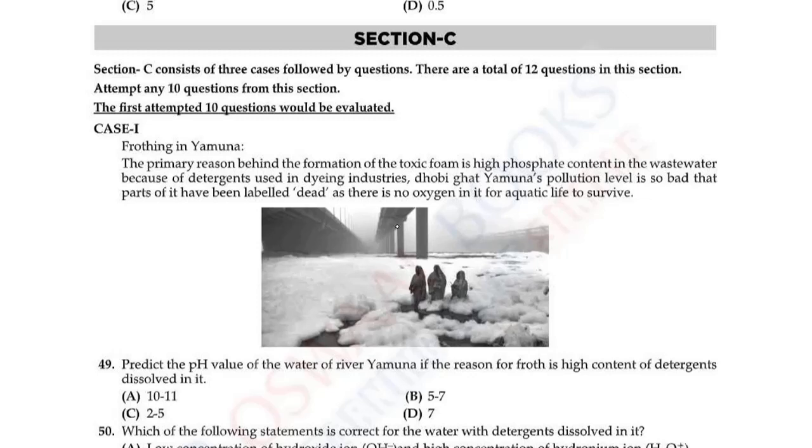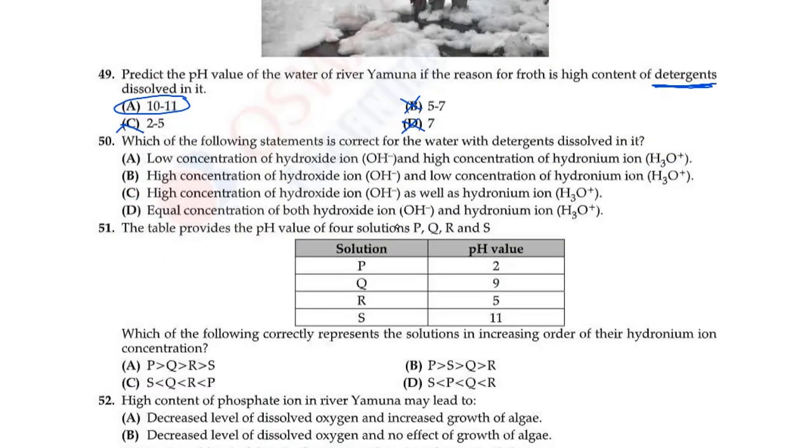Question 49: Predict the pH value of the water of river Yamuna if the reason for froth is high content of detergent. Detergents are basically bases, so if detergent dissolves in water, the pH will be greater than 7. If you look at the options carefully, 7 cannot be the answer because that's neutral, 5 to 7 cannot be because that would be acidic, 2 to 5 also cannot be acidic. That means option A is correct, which is 10 to 11.